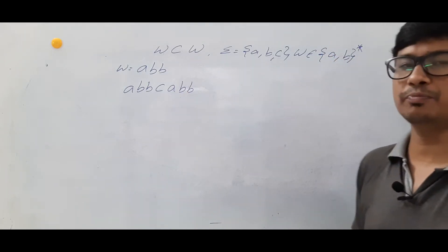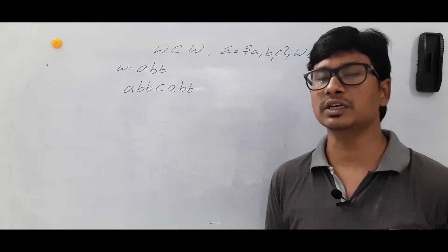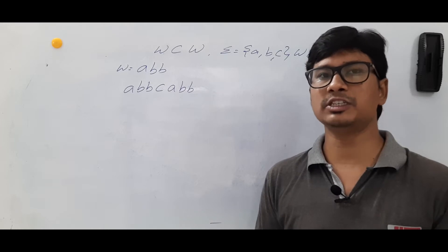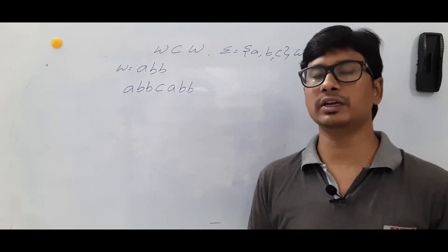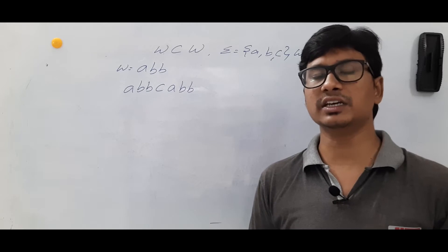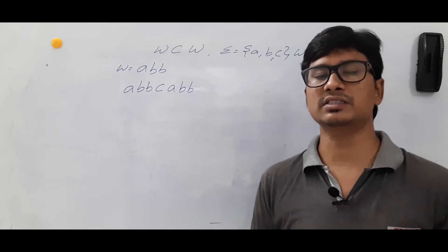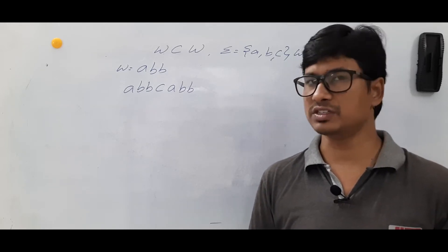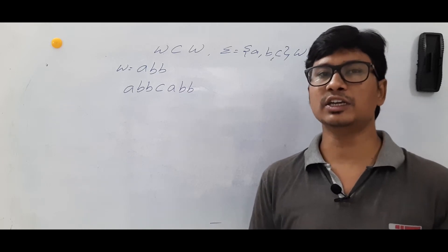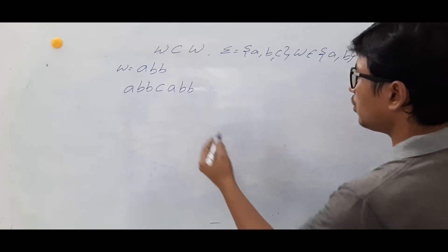Before constructing the Turing machine, I want to check whether we can construct either a deterministic pushdown automata or non-deterministic pushdown automata. If I can construct either deterministic or non-deterministic, I can say that it is a context-free language. If I cannot construct, then I can say that it is not a context-free language.